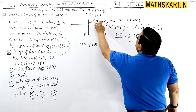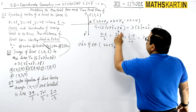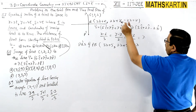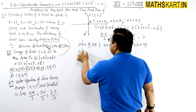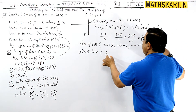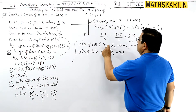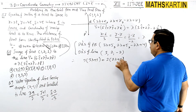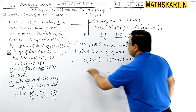The DRs of PQ are: (3λ + 6 − 1, 2λ + 7 − 2, −2λ + 7 − 3) = (3λ + 5, 2λ + 5, −2λ + 4). The DRs of the line are (3, 2, −2). Since PQ is perpendicular to the line, we write: 3(3λ + 5) + 2(2λ + 5) − 2(−2λ + 4) = 0.